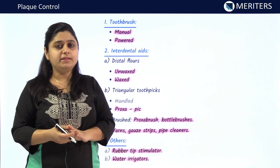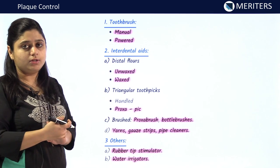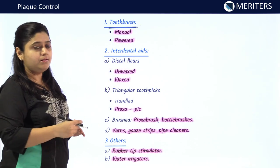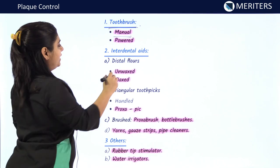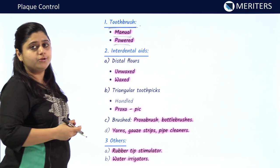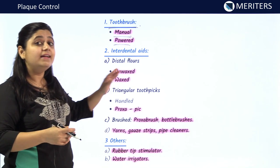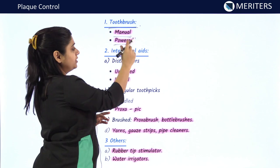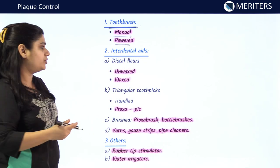Let us see some methods of mechanical plaque removal by an individual. The first method is tooth brushing, which can be done manually or by using a powered or battery-operated toothbrush. The second method is by the use of interdental aids. Interdental aids are used as an adjunct to tooth brushing — they cannot be used as a substitute but can be used along with tooth brushing.